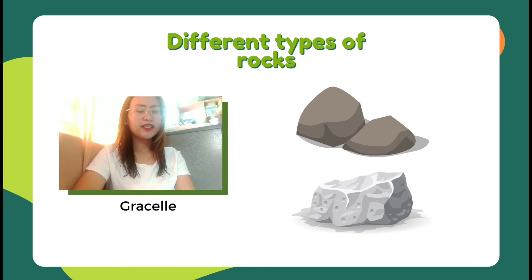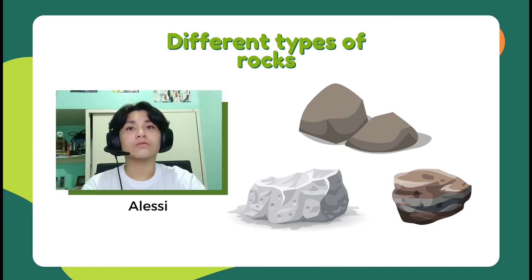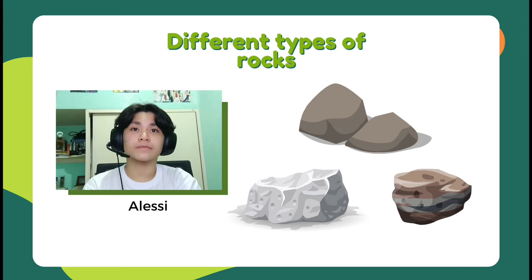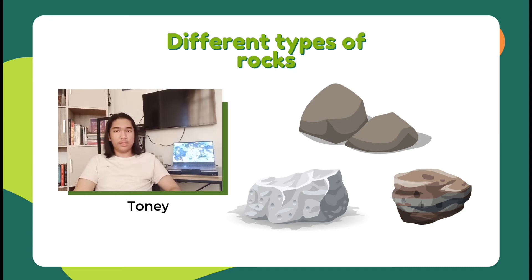Doesn't rock forming have two types — sedimentary rock and igneous rock, right? Actually, there are three. The other type is called metamorphic rock. So there are three types of rock forming. The first one is sedimentary rock, formed from pieces of other existing rocks or organic materials. The second one is igneous rock, which is derived from the Latin word for fire — it forms when hot molten rock crystallizes and solidifies. As for the last one, metamorphic, it's when rocks are subjected to high heat and high pressure.